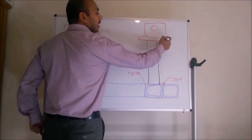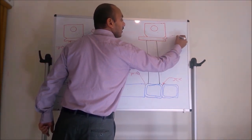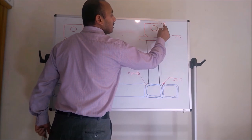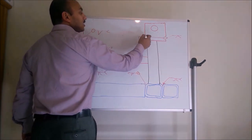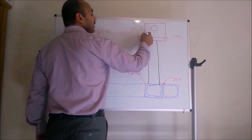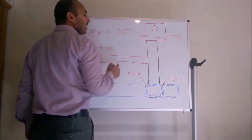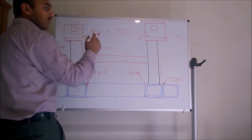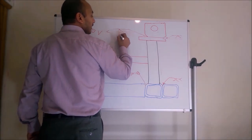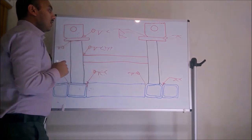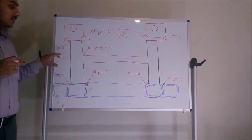Groove weld can be given along the thickness of the plate. If more strength is needed, a combination of bevel weld plus fillet weld can be applied. In this way we can define welds on the weldment and give sizes based on the stress requirements.